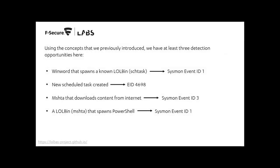Going back to our detections: the third one is MSHTA downloading content from the internet — again Event ID 3 — and then spawning PowerShell, Event ID 1. In the bottom left, the LOLBas project is an awesome resource for living-off-the-land binaries and scripts. You can look for a given functionality — application whitelisting bypass, downloader, executor — and see which Windows binaries, scripts, or libraries you can use to achieve that effect. They may already be on disk, just like MSHTA and schtasks. Super cool to look at.